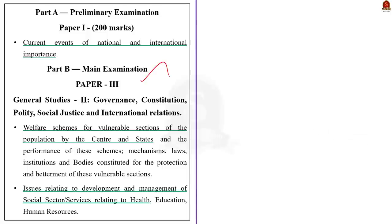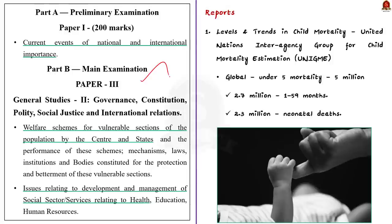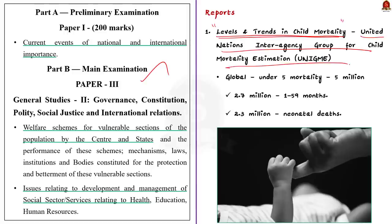Let us start with the reports mentioned in the article. The first is the Levels and Trends in Child Mortality report released by the United Nations Interagency Group for Child Mortality Estimation. As per the report, 5 million children died before their fifth birthday — that is, under-5 mortality — in the year 2021. The report also says that over 2.7 million deaths occurred among children aged 1 to 59 months, and the remaining 2.3 million deaths occurred in just the first month of life, i.e. neonatal deaths. This is the global scenario.